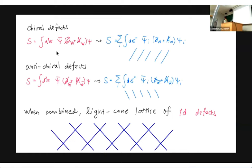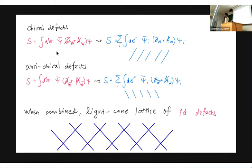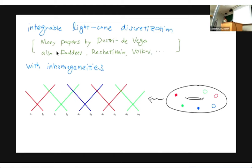You can easily discretize in that direction, and similarly in the transverse direction where there is no derivative. For anti-chiral defects, the derivative is in the other direction, so you discretize in the orthogonal direction. The end result is a lattice in orthogonal directions — a light-cone discretization. This type of light-cone discretization was discussed in the literature many decades ago, but our approach is much more general and can also handle multiple defects, giving more complicated lattices with inhomogeneities.